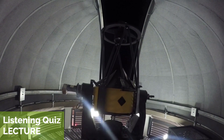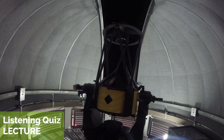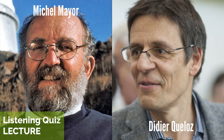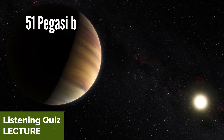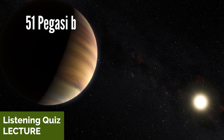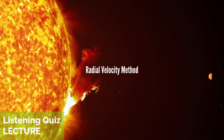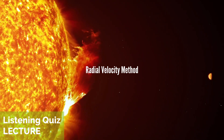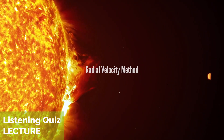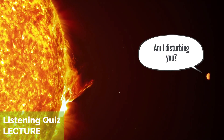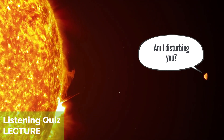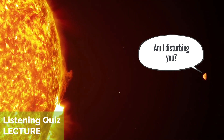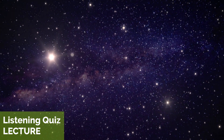The first exoplanet was discovered by Swiss astronomers Michel Maier and Didier Coelhoz in 1995. It is now known as 51 Pegasi b, a planet about 50 light-years away from us. They detected the planet using the radial velocity method, which measures the wobble of a star as it is tugged by the gravity of an orbiting planet. The discovery opened up a whole new field of research, leading to the detection of thousands of exoplanets over the years.